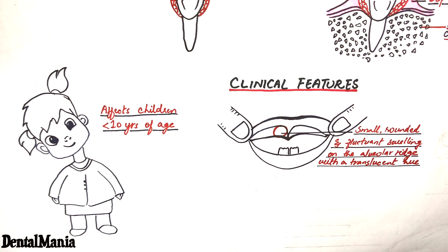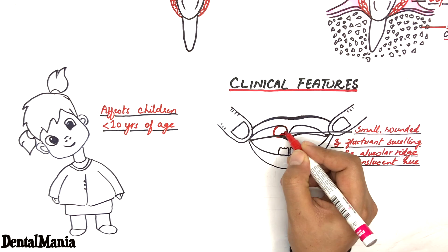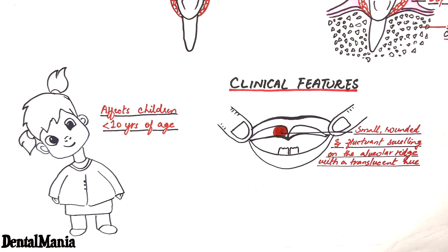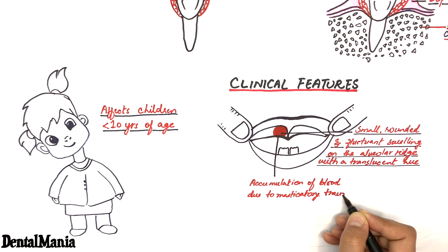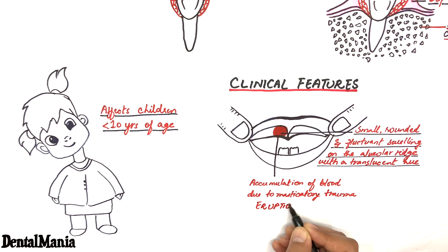As the cyst lies immediately under the alveolar ridge, this makes it prone to masticatory trauma by the opposing teeth, resulting in accumulation of blood within the cystic cavity. This is the reason the cyst is also called eruption hematoma.